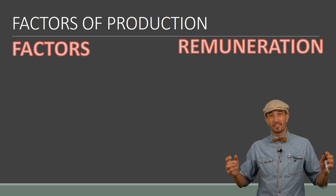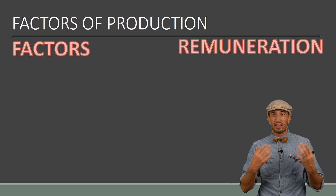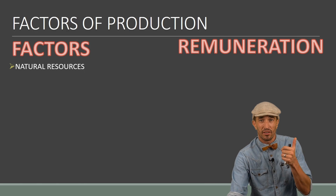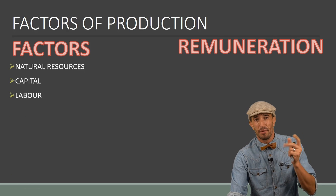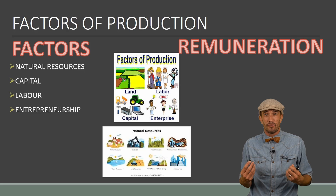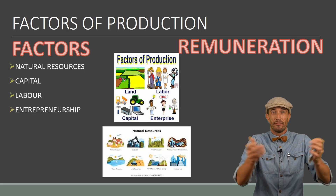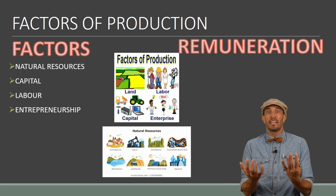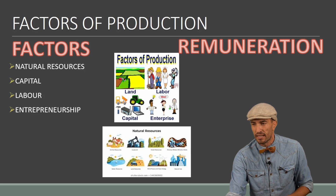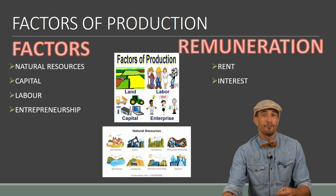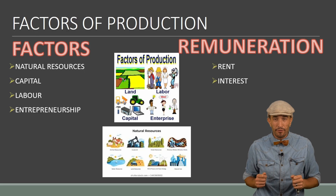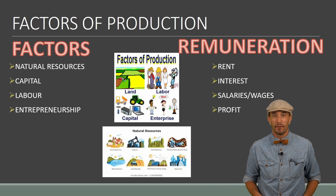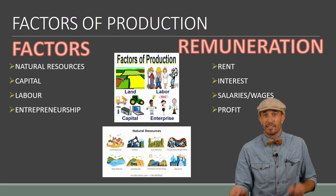As a recap from previous years in grade eight, we talked about the factors of production — remember there are four, and they are owned by us the households. The first one is natural resources, then we have capital, labor, and entrepreneurship. These things have a cost: natural resources earn rent, capital earns interest, labor earns salaries and wages, and entrepreneurship earns profit — that's why an entrepreneur starts a business.